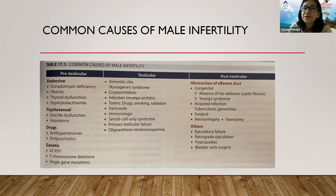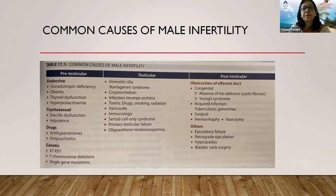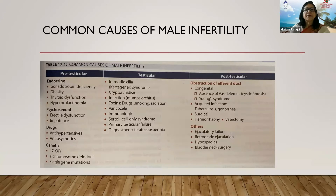Testicular causes include Kartagener syndrome, where immotile cilia hinder sperm movement. Cryptorchidism — undescended testes — left untreated for several years leads to higher abdominal temperature, which impairs spermatogenesis and may cause azoospermia. Childhood mumps orchitis or any other infection causing orchitis can also impair spermatogenesis.